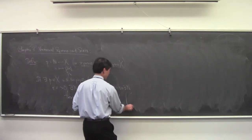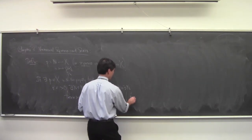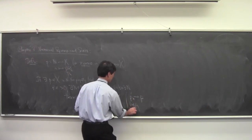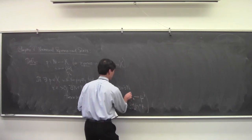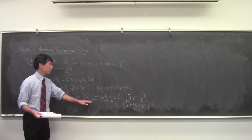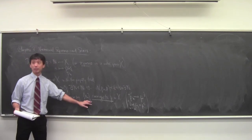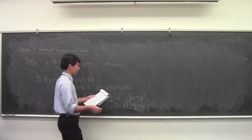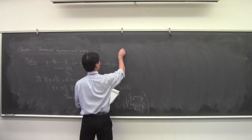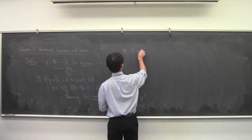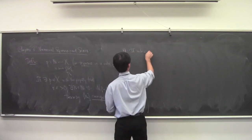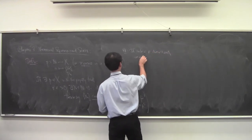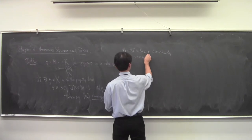If there exists a point p in X with the property that for all ε > 0, there exists an N in ℕ such that the distance from p_n to p is less than ε for all n ≥ N, then we say p_n converges to p in X. If such a p doesn't exist, we say p_n diverges.